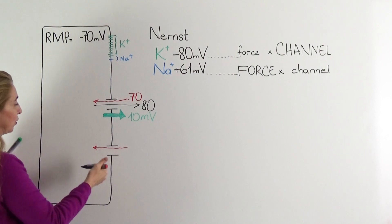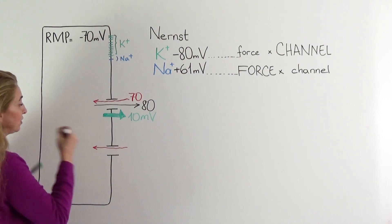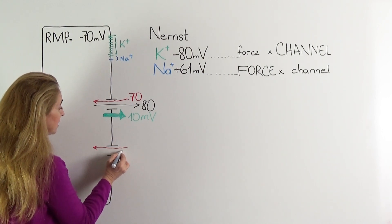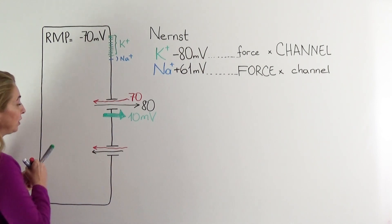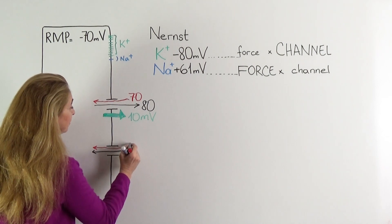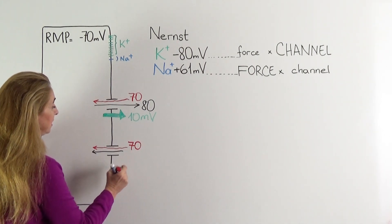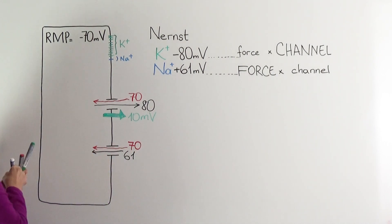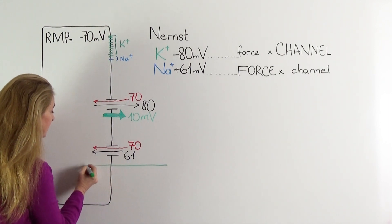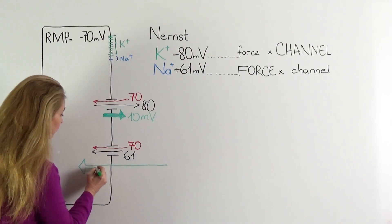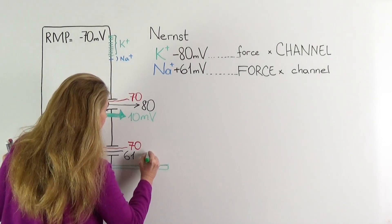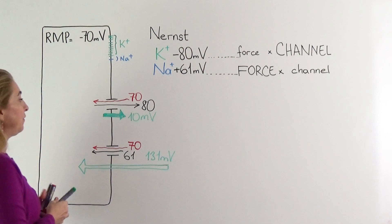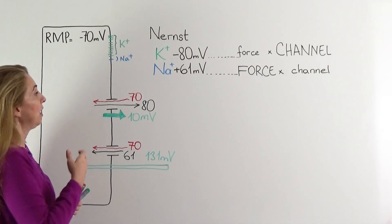What about for sodium? For sodium, the concentration difference is from outside to inside, and the chemical force is going to push sodium into the cell. The electrical force is 70 millivolts in amplitude, and the chemical one is 61. The net driving force for sodium is the addition of these two forces, and it is 131 millivolts for sodium.